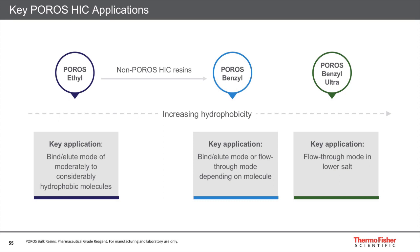Last but not least, we have launched three HIC resins: the ethyl, the benzyl, and the benzyl ultra. We wanted to extend the hydrophobicity range offered by other HIC resins on the market. Surface hydrophobicity determines the mode of operation — we recommend the ethyl for bind-and-elute applications of very hydrophobic molecules, while the benzyl can be used in both bind-and-elute or flow-through mode depending on your molecule's hydrophobicity. The extremely hydrophobic benzyl ultra was designed for flow-through applications such as aggregate removal without addition of salt or at very low salt concentrations.